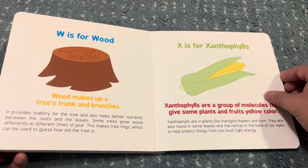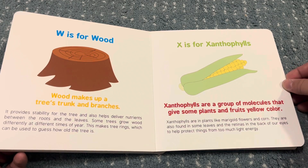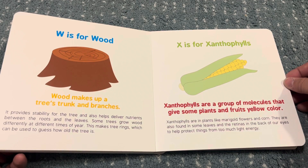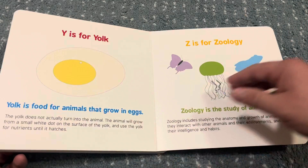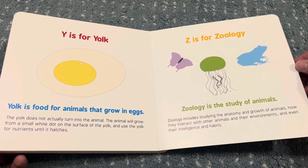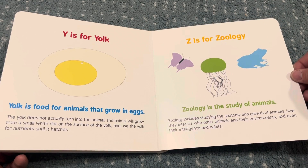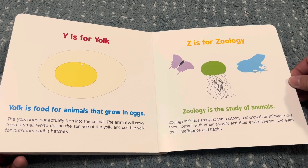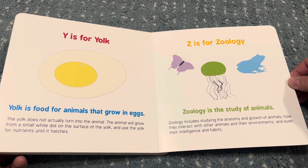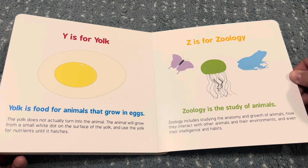X is for xanthophils. Xanthophils are a group of molecules that give some plants and fruits yellow color. Y is for yolk. Yolk is food for animals that grow in eggs. Z is for zoology. Zoology is the study of animals.